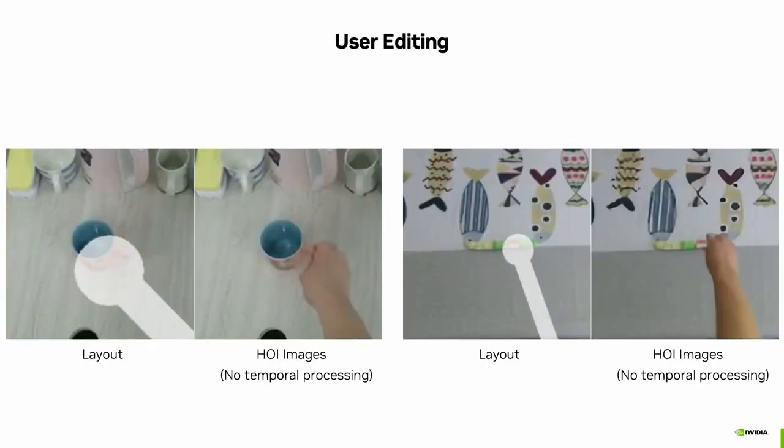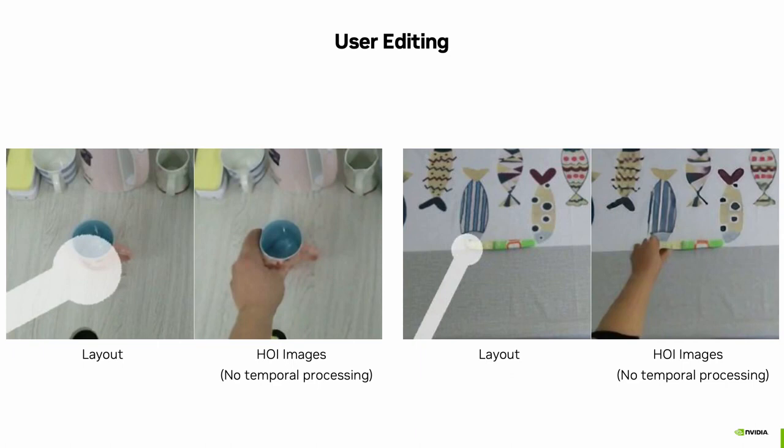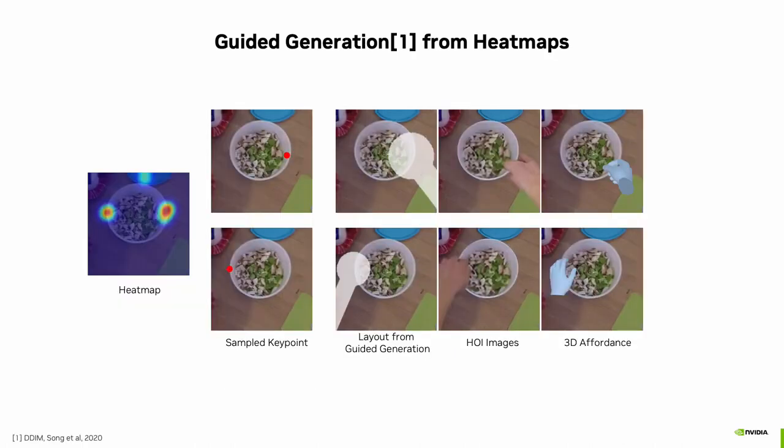For the rest of the presentation, we show several applications that our method allows. First, the layout representation provides an interface for user editing. The generated appearances are faithful to the layout while generating diverse articulations. Second, affordance diffusion could be guided from a heatmap. Besides 2D application positions specified in the heatmap, it can hallucinate approaching direction, hand articulation, 3D hand pose, and more.